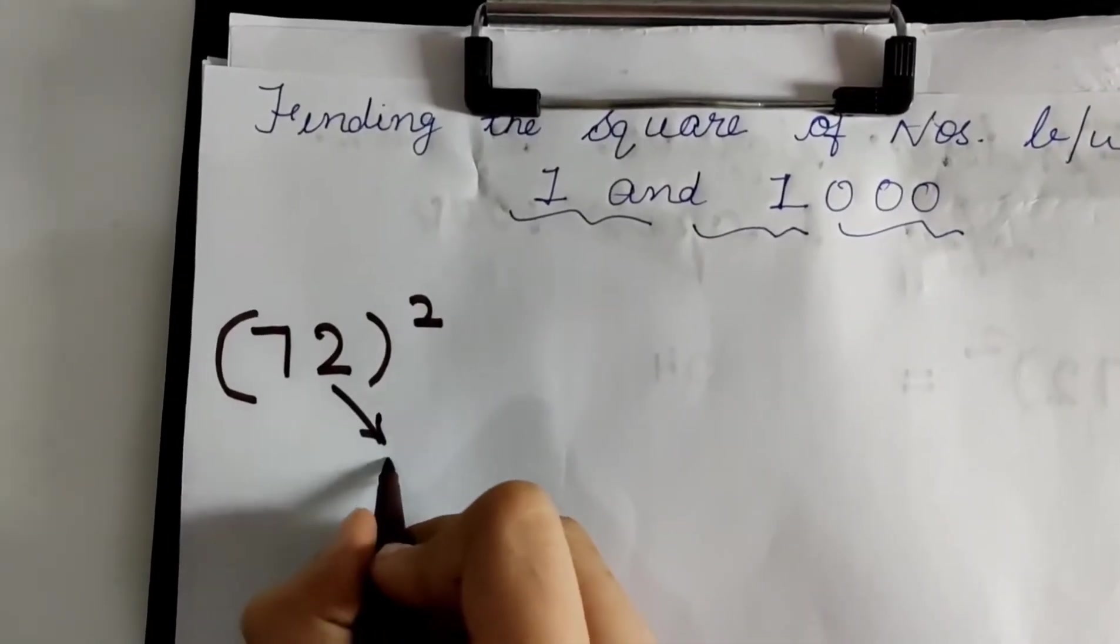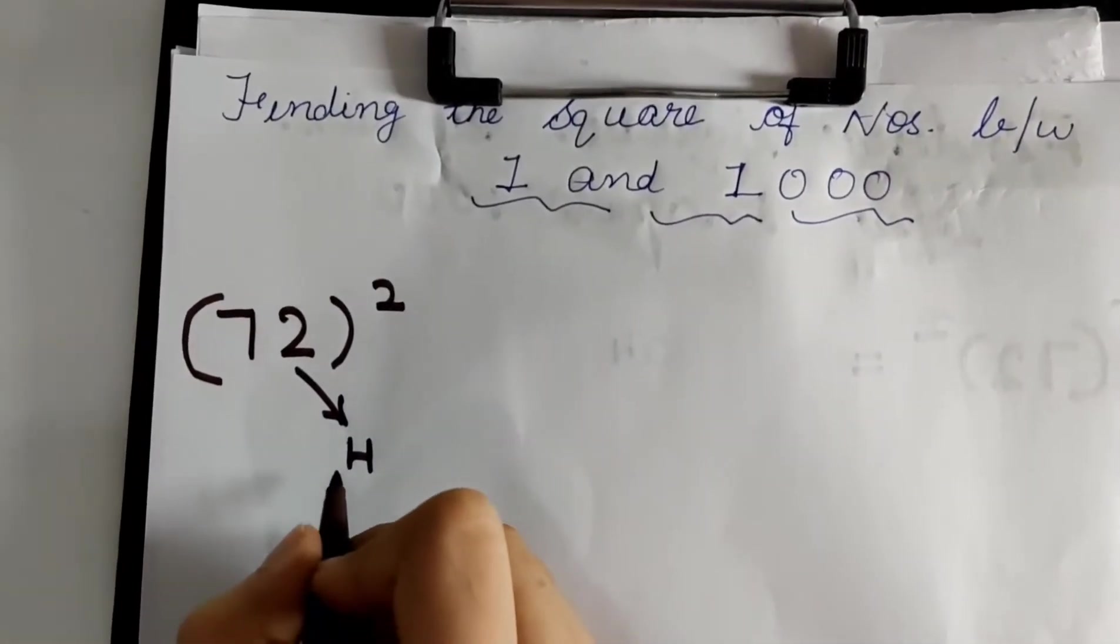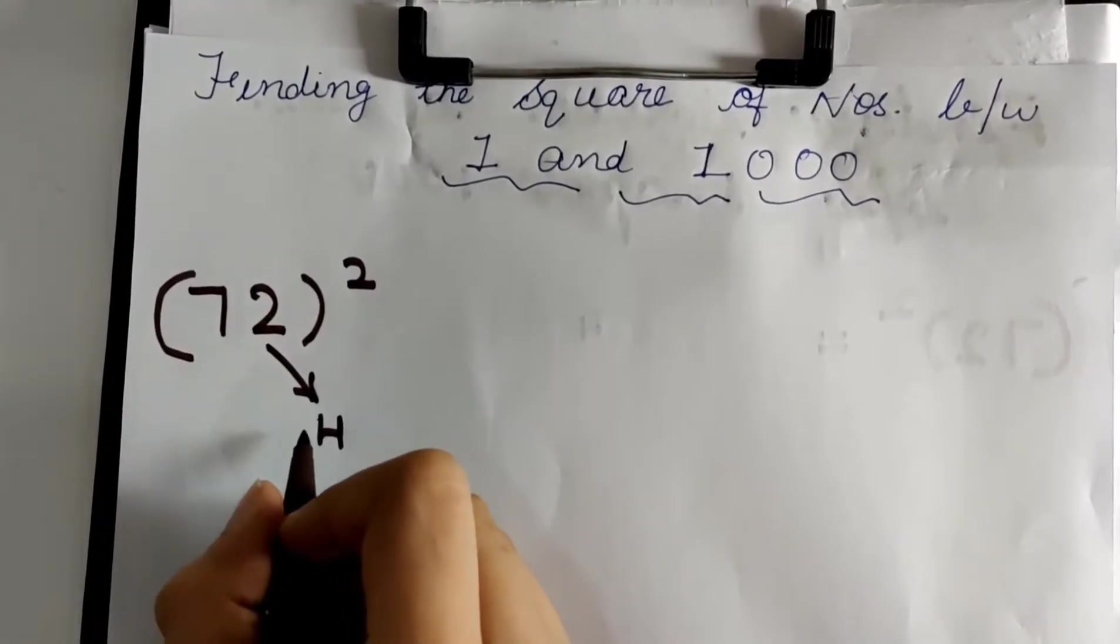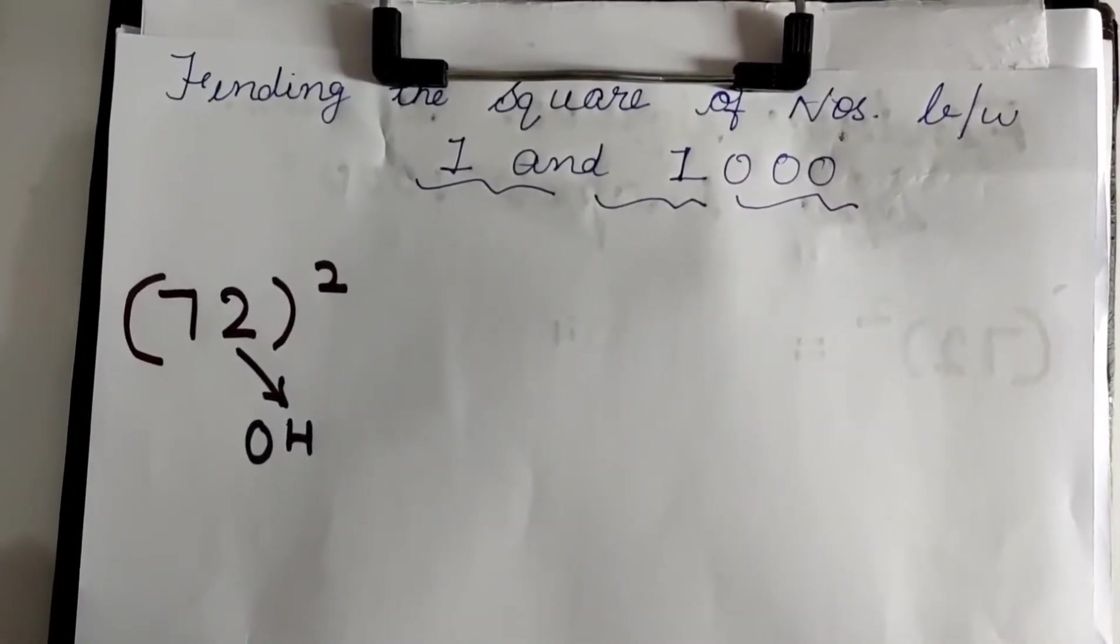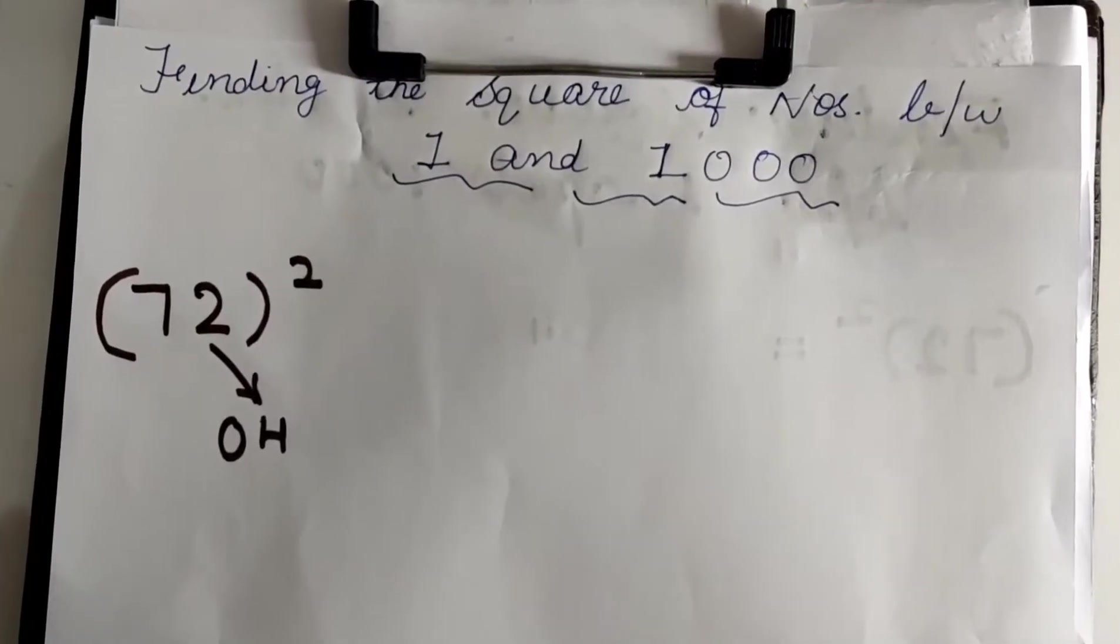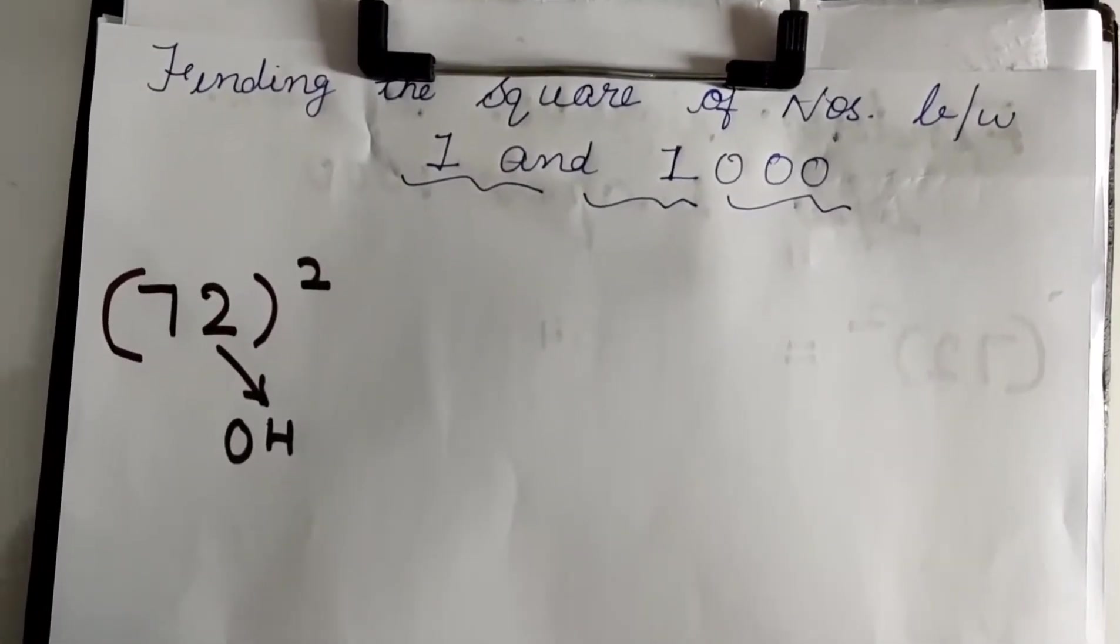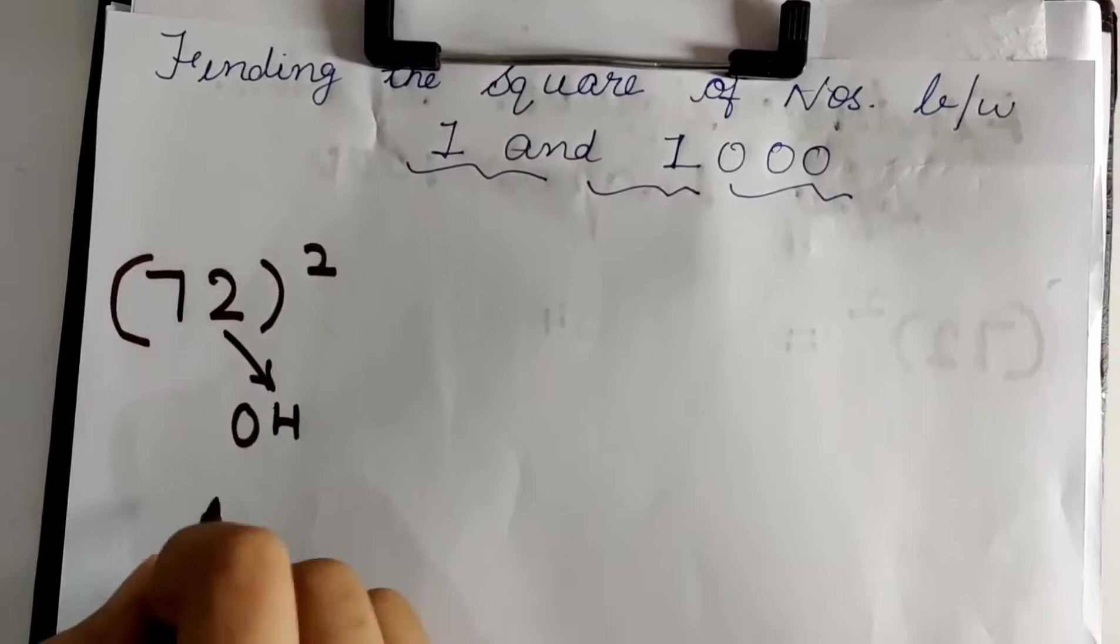I have to find the square of 2. Square of 2 is 4. I won't write 4 as it is. I will write it as 04. This is because in Vedic Maths, we cannot write a 1 digit number as a 1 digit number. We have to make it a 2 digit number by adding a 0.